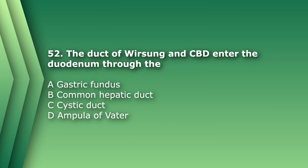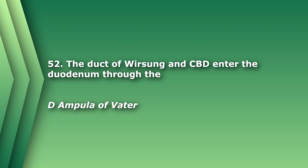Question 52: The duct of Wirsung and CBD enter the duodenum through: A) gastric fundus, B) common hepatic duct, C) cystic duct, D) ampulla of Vater. The answer is D, ampulla of Vater.